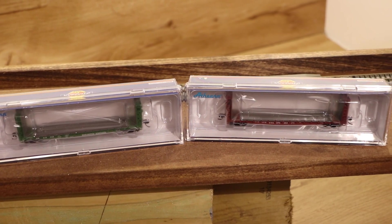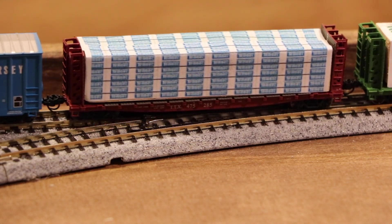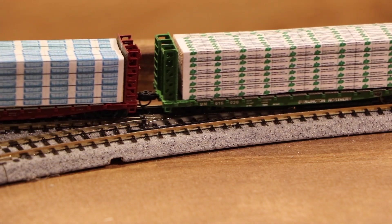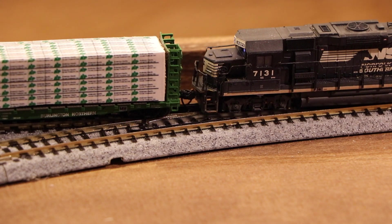Hey, it's Steve. In this video, we are going to take a look at the Athern 53-foot bulkhead flat cars in N-scale, as well as an easy and basically free way to make some lumber loads for them.